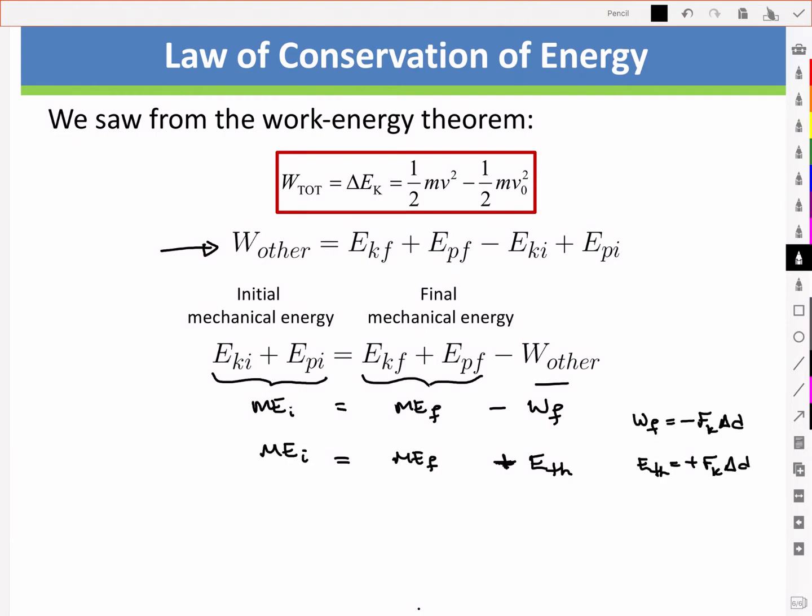And hence we can see that the final mechanical energy will be less than the initial mechanical energy, because some energy is converted to heat. And so like I said before, we always have energy being conserved, but here that work due to friction is stealing away some of the energy from our useful mechanical energy, and it's converting it into thermal energy or heat.